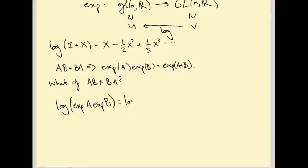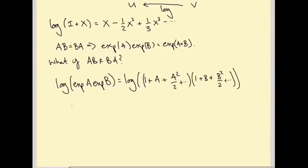Let's compute. So it's log of identity plus A plus A squared over 2 plus dot dot dot times identity plus B plus B squared over 2 plus dot dot dot. So let's multiply these two power series together. This is log of identity plus A plus B plus A squared over 2 plus B squared over 2, and then we get terms like AB squared over 2 plus A squared B over 2, and then we get things like A squared B squared, etc., higher order terms.